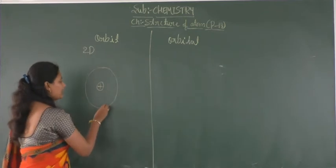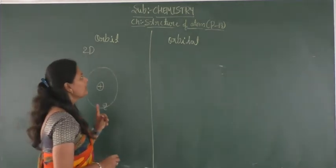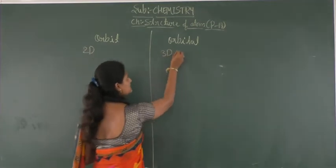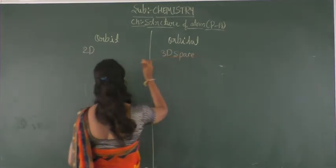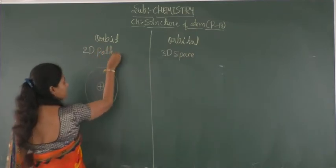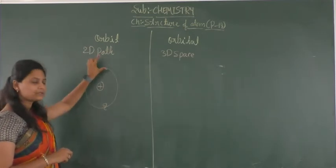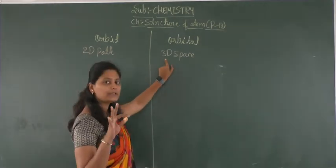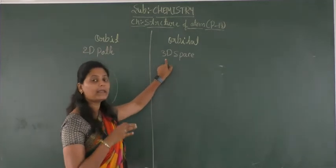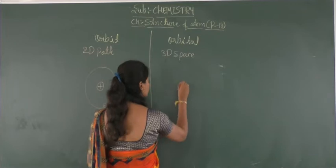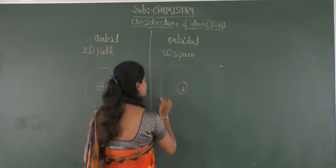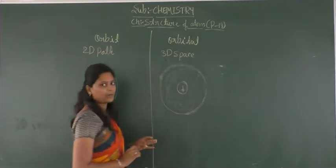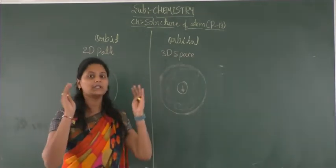An orbit is a two-dimensional path where the electrons are revolving around the nucleus. An orbital, on the other hand, is the three-dimensional space where the probability of finding an electron is maximum. Here, around the nucleus, this three-dimensional space is the orbital — a spherical orbital — where we will be able to find the electrons.